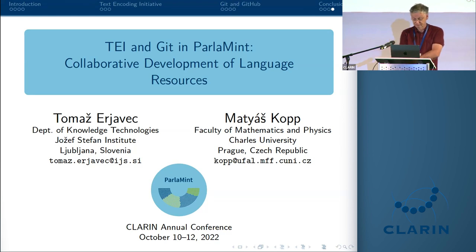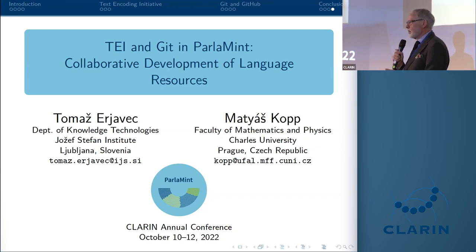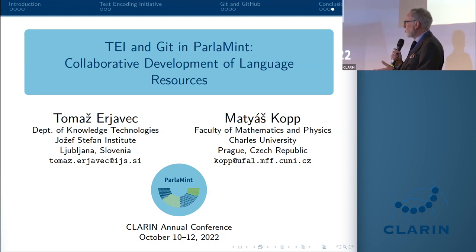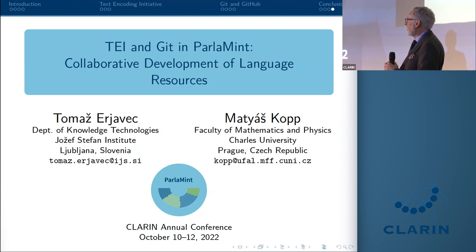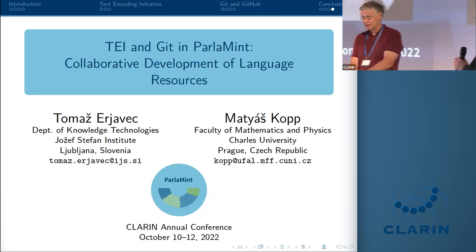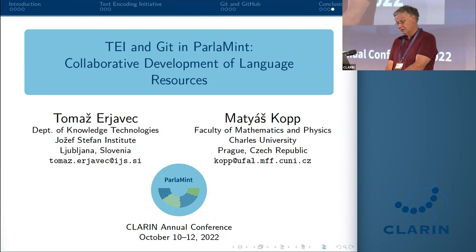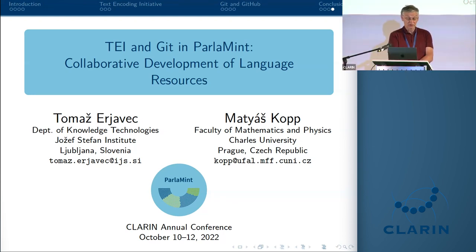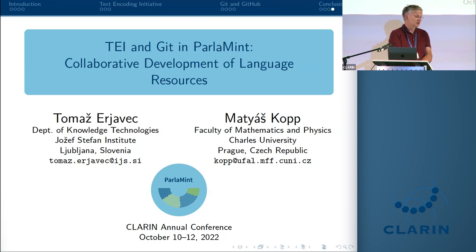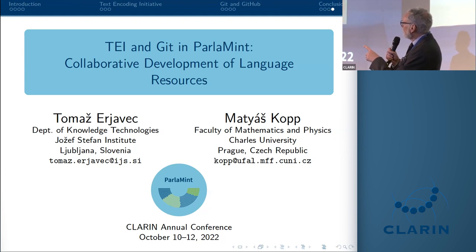The chair notes that ParlaMint is fairly unique among resource families because it's such a cooperative, highly integrated project. Could this methodology with TEI and Git be used to make other resource families more interoperable? The short answer is yes — it depends on the kind of resource family and what people already have. Modifications would be needed, but the same system could be used for other things. The key point is that the end product is tightly controlled, which brings benefits like interoperability.